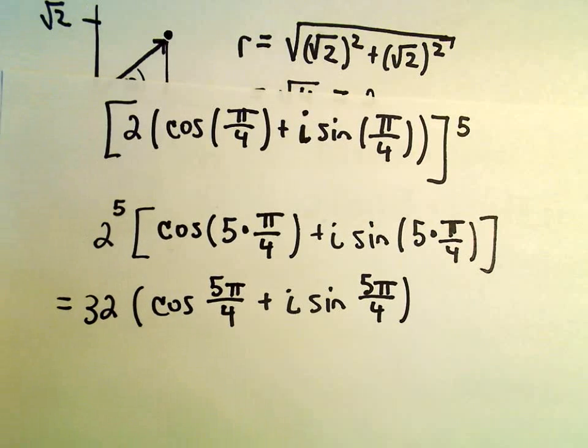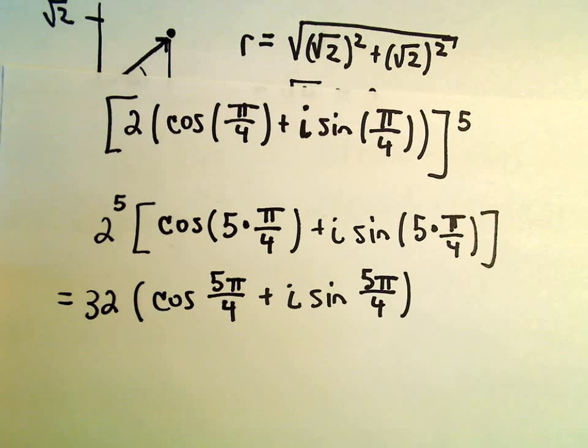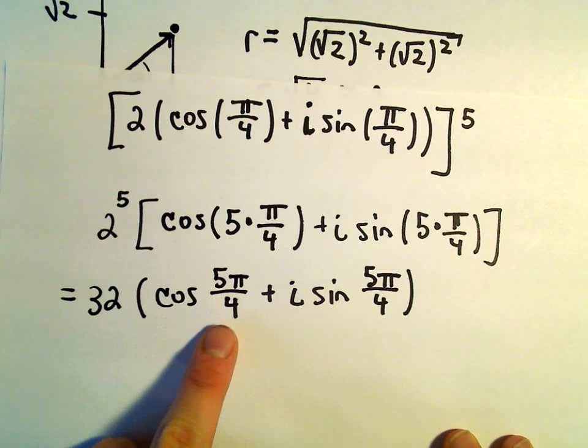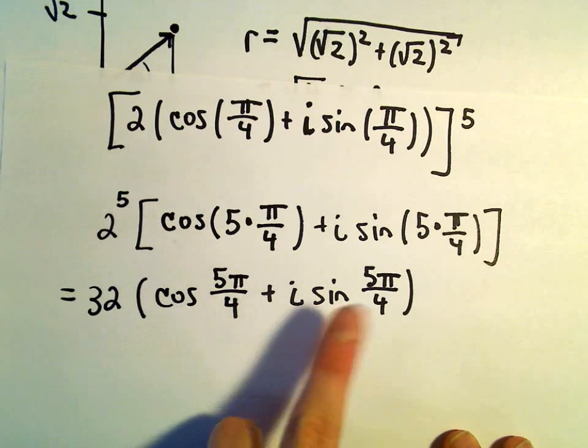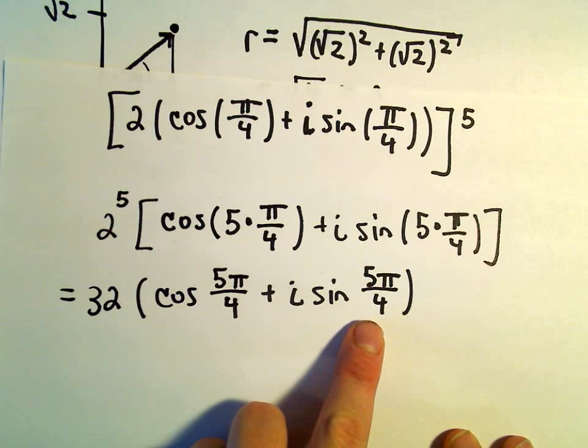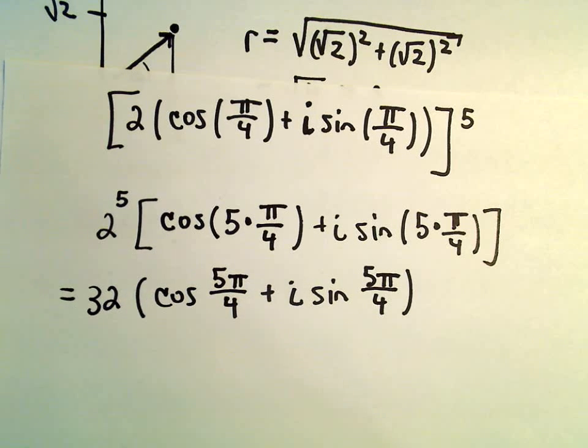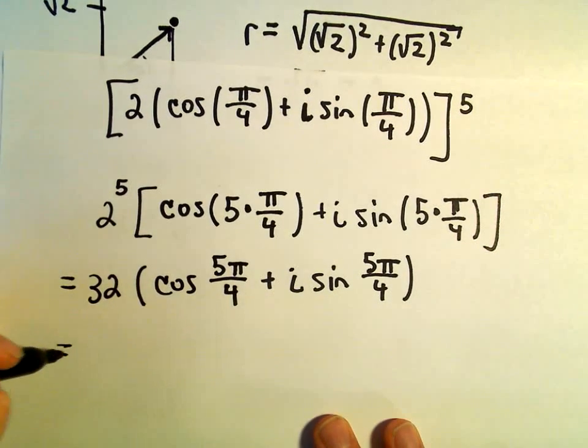And again, I think I'll probably leave it here. This is now in polar form. Again, you could always simply evaluate cosine of 5π/4, sine of 5π/4, distribute the 32. Well, who cares? Why not? Let's go ahead and do it here real quick.